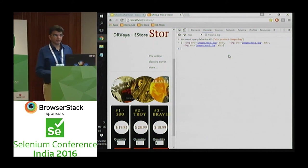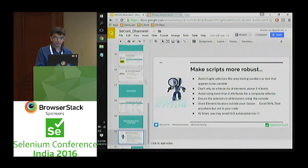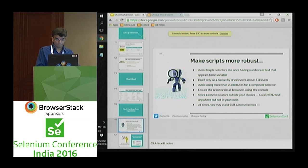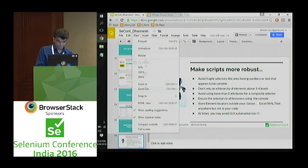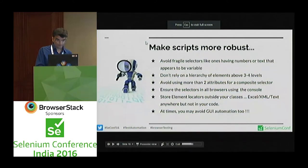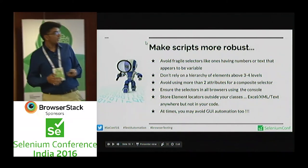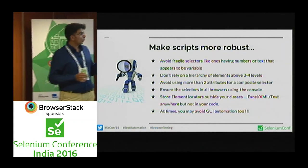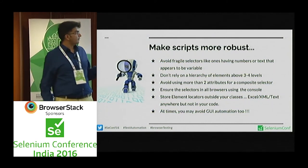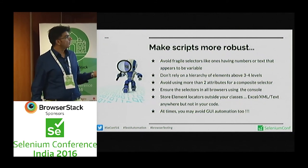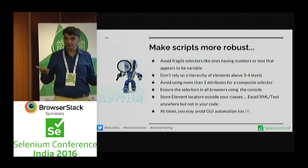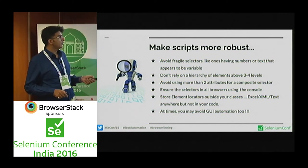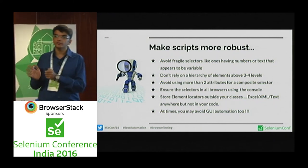Those are some basic examples from this presentation, though there are still complex ways to handle things. To summarize the key points: avoid fragile selectors; don't rely on too many hierarchy levels; avoid more than two or three composite attributes; check your selectors in the browser before writing your test; and store your element locators outside your classes so that your code is more maintainable.